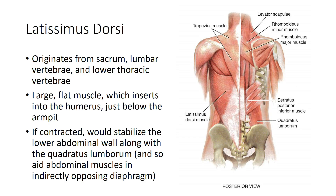The latissimus dorsi is a large superficial muscle in the back, coming from the sacrum and the lumbar and lower thoracic vertebrae, inserting into the arm just below the armpit. Its primary function involves moving the arm — for example, the lat machine pull-down exercise in the gym. For respiration purposes, this muscle can help stabilize the posterior abdominal wall along with the quadratus lumborum.